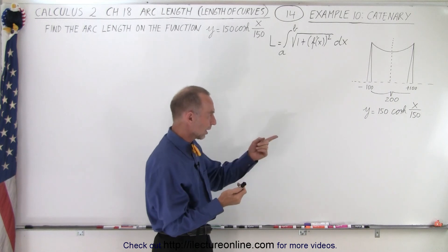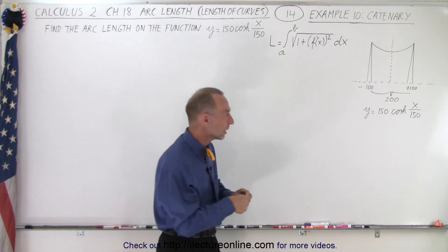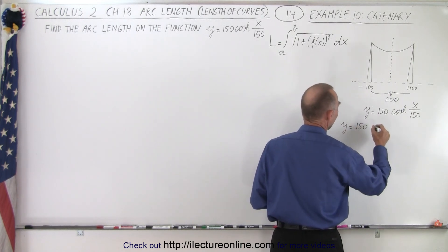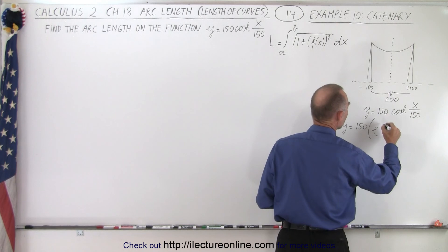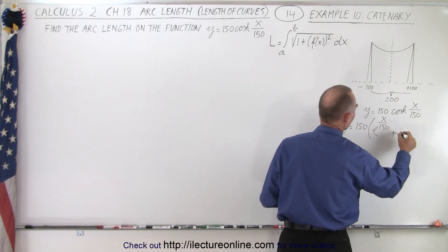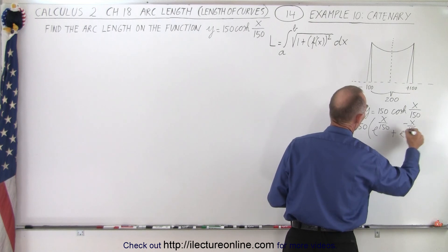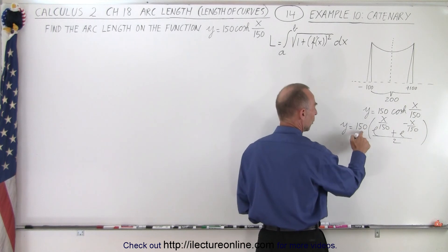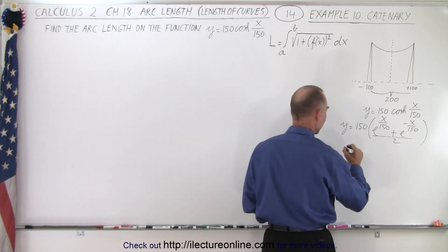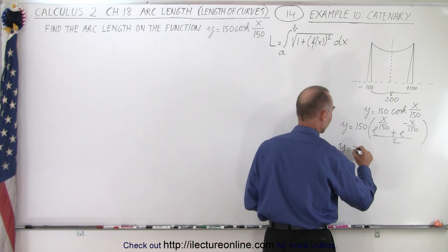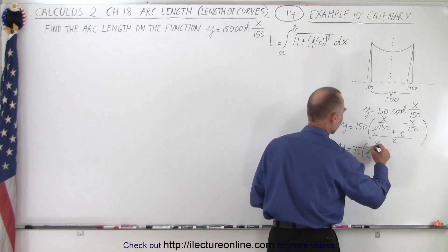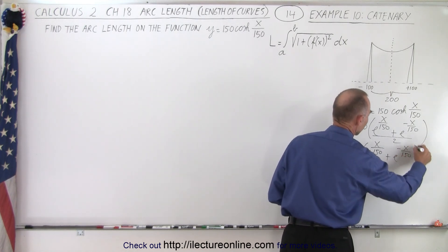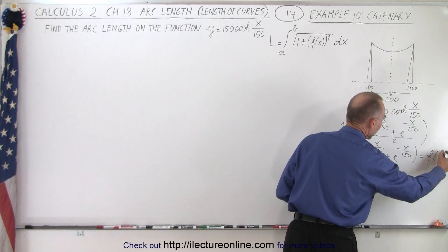We want to convert the hyperbolic cosine into exponential form: y equals 150 times the quantity e to the x over 150 plus e to the minus x over 150, all divided by 2. That is the equivalent of the hyperbolic cosine. So 150 divided by 2 is 75, and we end up with y equals 75 times the quantity e to the x over 150 plus e to the minus x over 150. That is our function f(x).